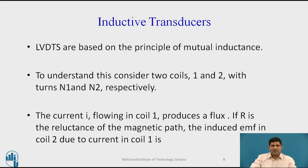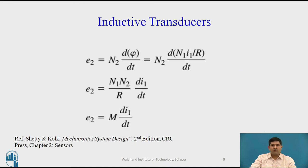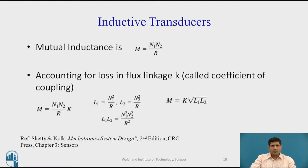Coming to LVDTs, which are a special case of inductive transducers, these are based on the principle of mutual inductance, not self-inductance. Consider two coils labeled 1 and 2, with turns N1 and N2, and current I going to coil 1, which produces a flux. If R is the reluctance of the magnetic flux path, then the induced EMF in coil 2 due to current I will be given by E2 = N2 dφ/dt, which can be simplified and written as E2 = M di/dt, where M is the coefficient of mutual inductance. So mutual inductance is written as N1·N2/R.